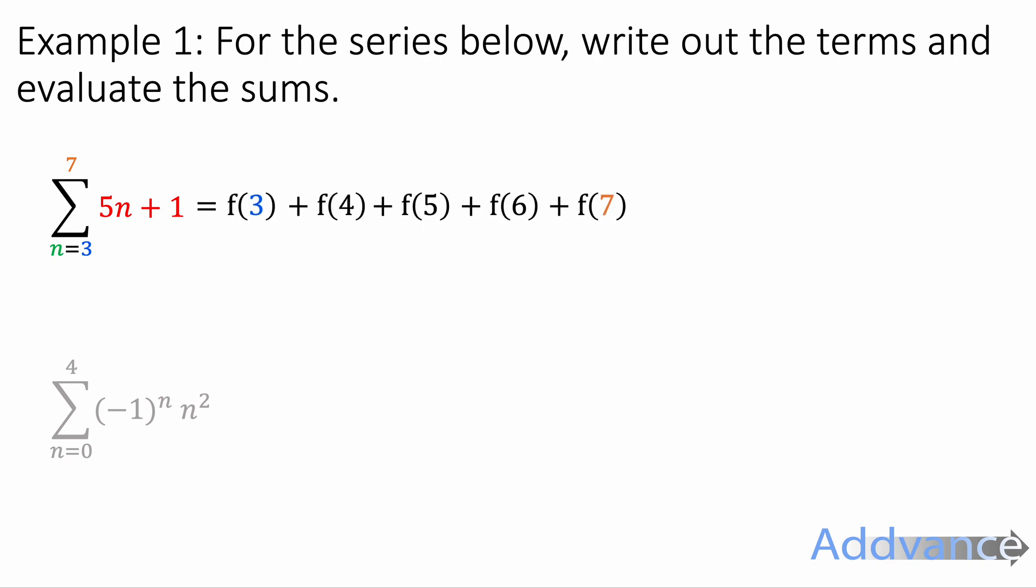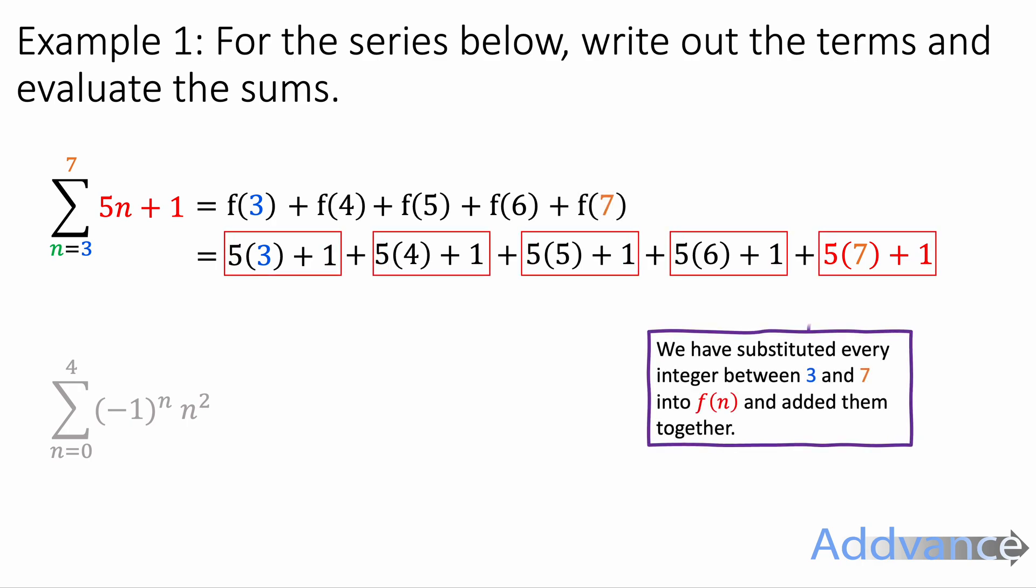Like this. So f of 3 is 5 times 3 plus 1. F of 4 is 5 times 4 plus 1. And here we've substituted all integers between 3 and 7 into f of n.